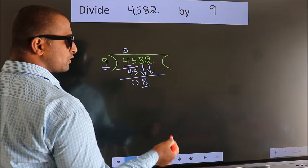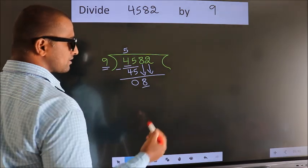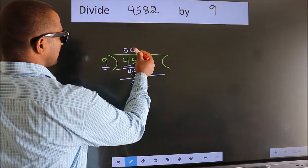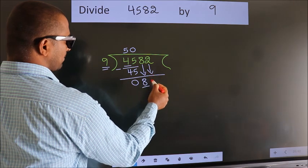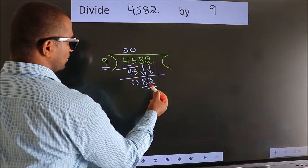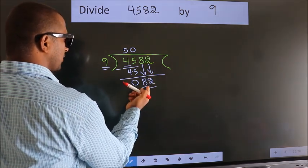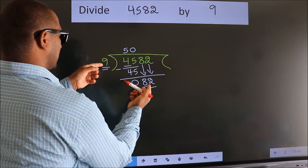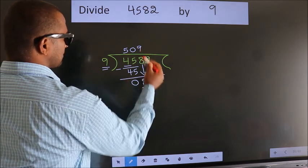And the rule to bring down the second number is, put 0 here. Then only we can bring down this number. So 82. A number close to 82 in the 9 table is 9 nines, 81.